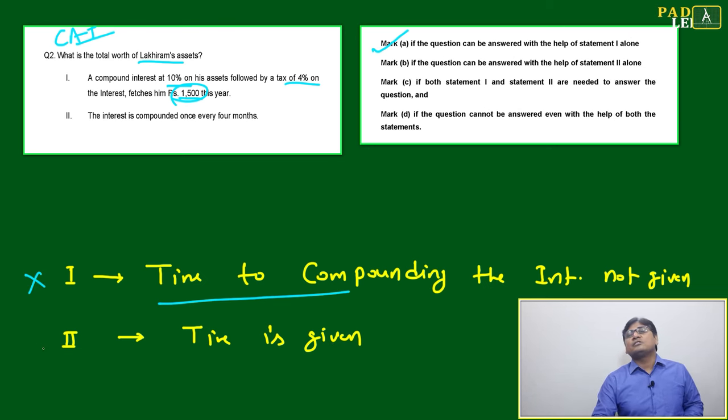So statement one is not sufficient. Statement two: Time is given—interest is compounded once every four months. But if other data you don't have, then again you are unable to find it. Statement two alone is also not sufficient.